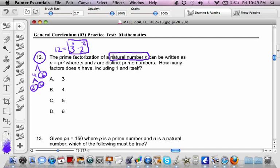So if we take a step back now, and we read this again, the prime factorization of a natural number n can be written as n equals pr squared. Whatever this natural number is, it can be written as a p times an r squared.